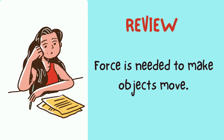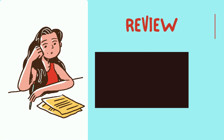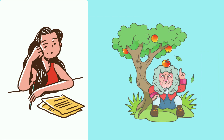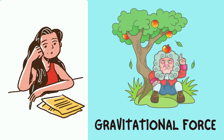In the previous lesson you learned that force is needed to move an object, and that the unit of force is named after Sir Isaac Newton. According to legend, Newton was lying under the shade of an apple tree when an apple fell and hit his head. He started wondering why the apple fell in the first place, and this is how he discovered gravitational force.